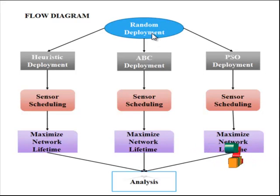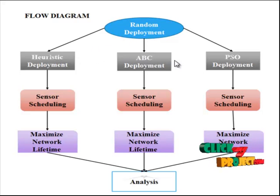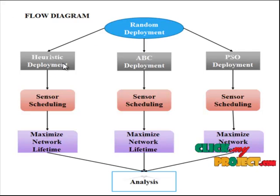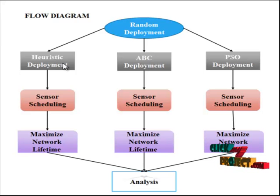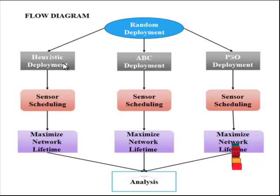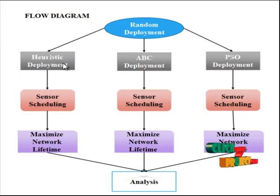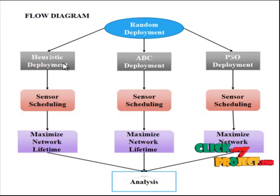Random deployment strategies are estimated based on URST deployment, ABC deployment, and PSO deployment. In URST deployment, sensors are initially placed randomly. If any sensor does not monitor any target, move that sensor to the least monitored target location. Sensor nodes are sorted in ascending order of the number of targets covered. Place each sensor node at the center of all targets it covers. While placing that sensor, it should cover one new target; then place that sensor at the center, and compute the sensor-target coverage matrix, or else discard that move and restore the original position.